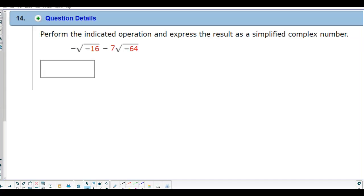In question number 14, we need to perform the indicated operation and express the result as a simplified complex number. So we're going to rewrite the question as negative the square root of negative 16 minus 7 times the square root of negative 64.